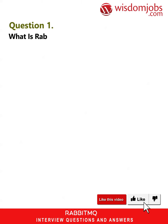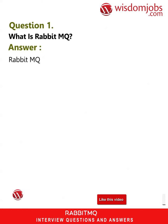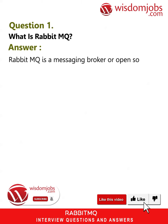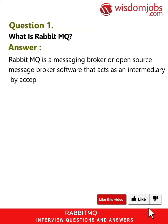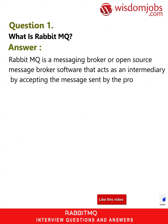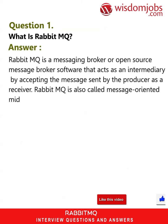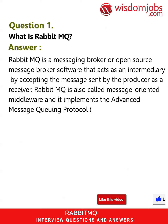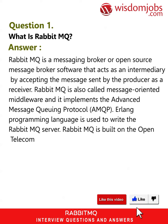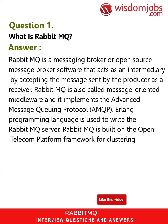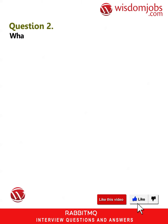Question 1: What is RabbitMQ? Answer: RabbitMQ is a messaging broker, or open source message broker software, that acts as an intermediary by accepting messages sent by the producer. RabbitMQ is also called message-oriented middleware, and it implements the Advanced Message Queuing Protocol (AMQP). The Erlang programming language is used to write the RabbitMQ server, which is built on the Open Telecom Platform framework for clustering.